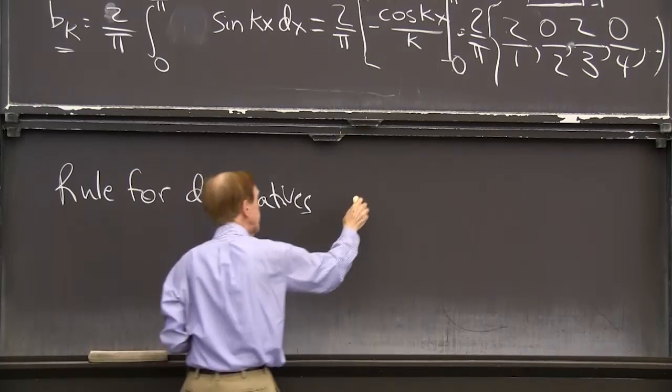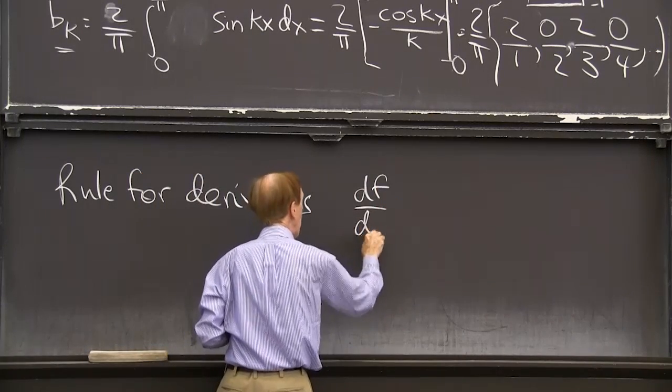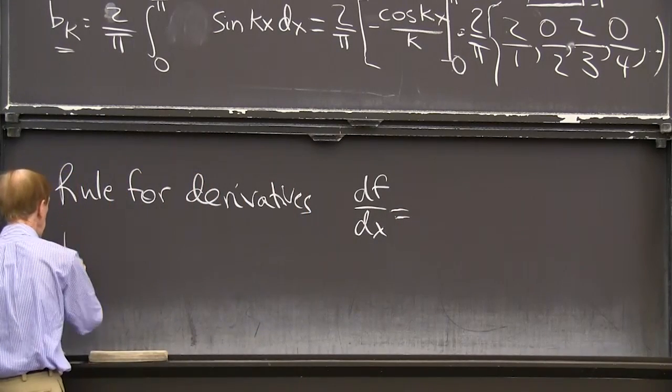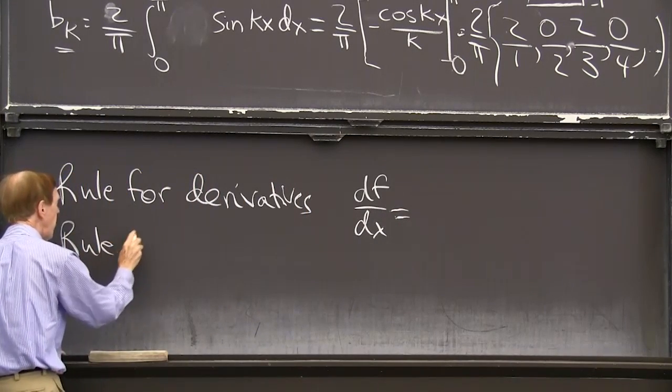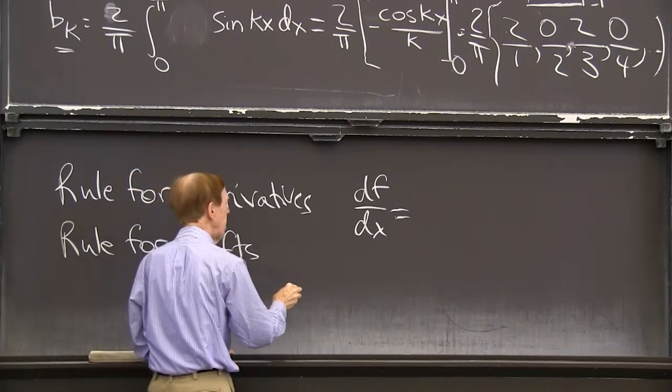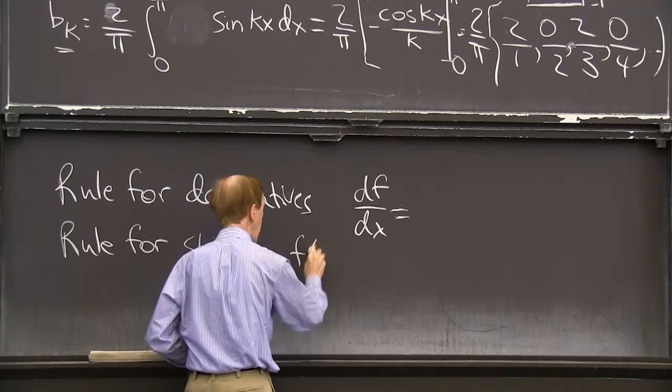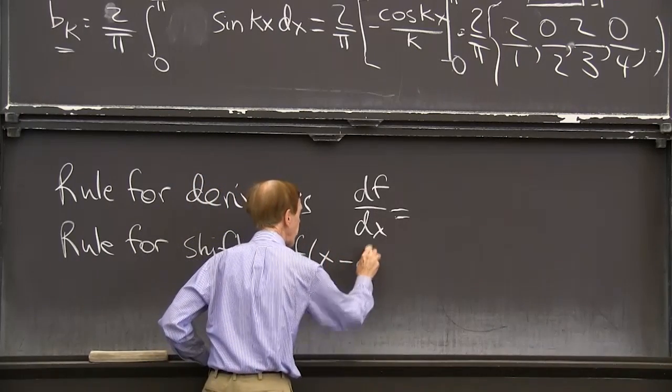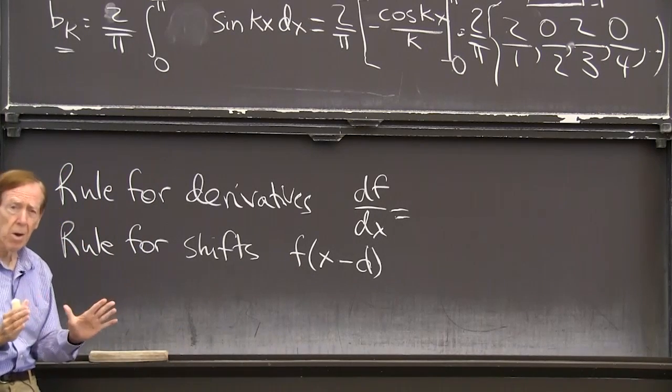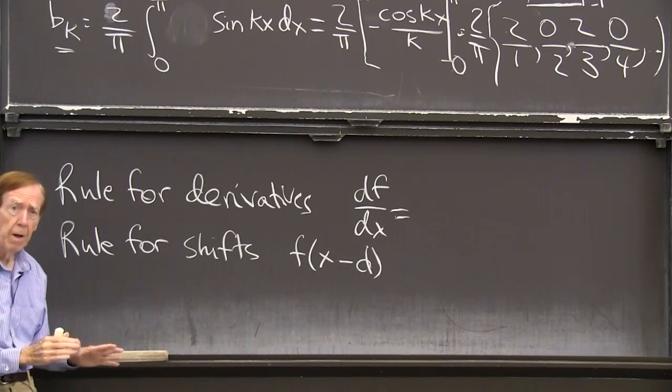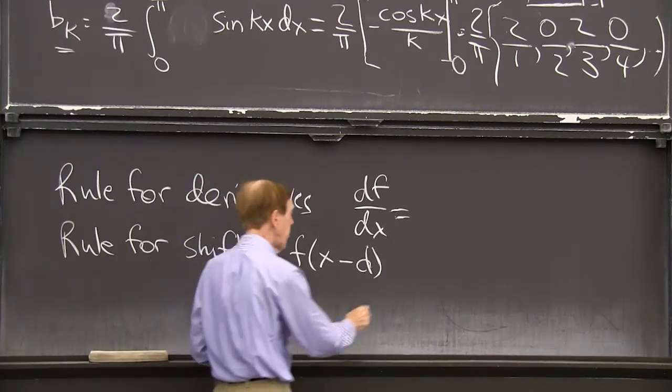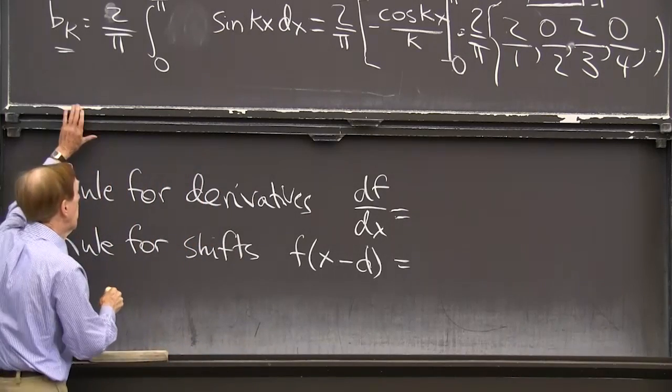So the rule for derivatives. What's the Fourier series of df dx? And the second will be the rule for shift. What's the Fourier series for f of x minus a shift? You know that when I change x to x minus d, all that does is shift the graph by a distance d.